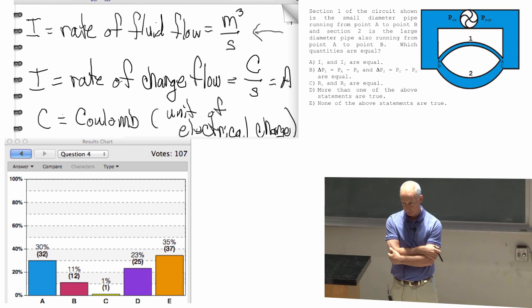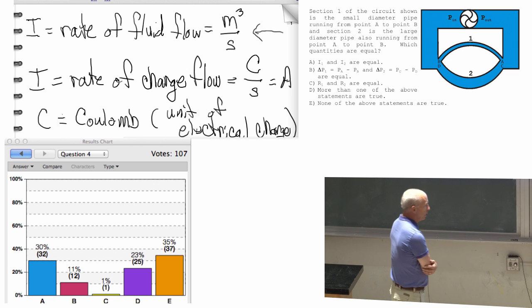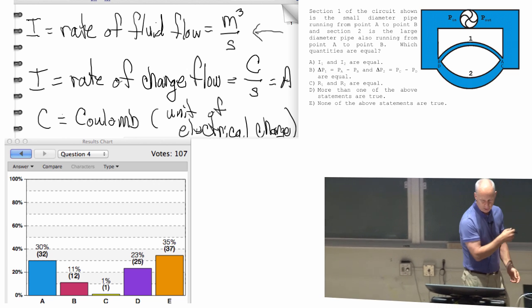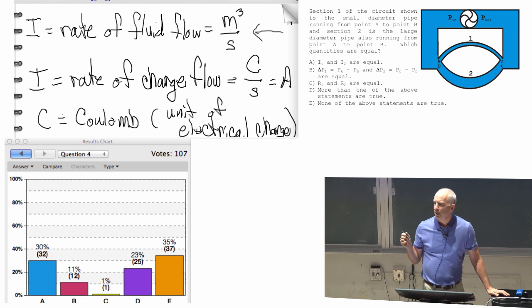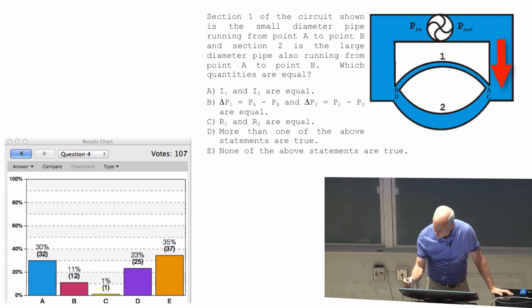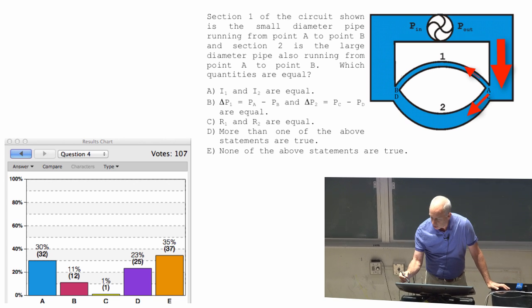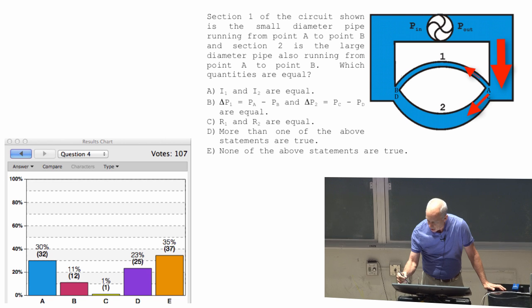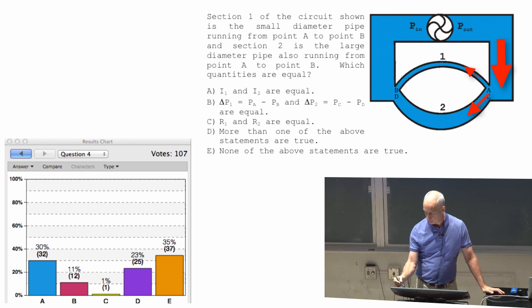Yeah? Did you mention something like, in the same system, the current always going to be the same? In the same system, the current's always going to be the same. What I said was that the current into some point is equal to the current out. So the current that goes down here is going to split into two pieces. So whatever that current is will be equal to I2 plus I1. The total current around this pipe will split into two. So that will be equal to I2 plus I1.